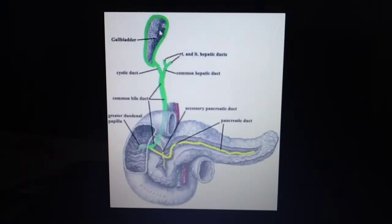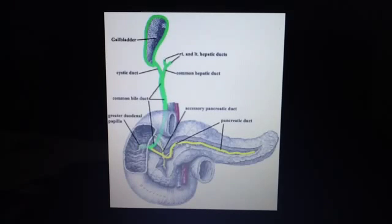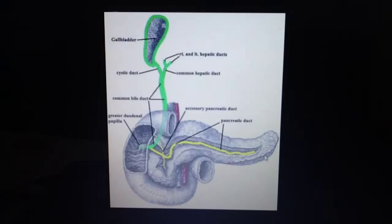Looking at the anatomy, we have the gallbladder above it and the cystic duct, the right and left hepatic ducts, the common hepatic duct, and leading into the pancreas you can see the pancreatic duct and the greater duodenal papilla. The pancreatic duct begins in the tail of the pancreas and runs through the parenchyma — the substance of the gland — to the head, where it turns inferiorly and merges with the bile duct.